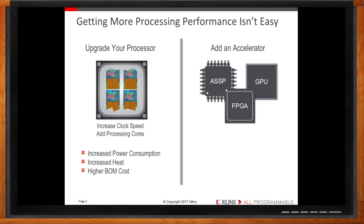For example, you can go with an ASSP that's ideal for the application processing you need, but you get almost no design flexibility for product differentiation — your design would have the same capabilities as your competitors. GPUs and FPGAs are very flexible, but come with software design complexity, potentially increasing product development time. Adding another chip also introduces BOM cost considerations and hardware design complexity. So a hardware accelerator can do the job, but adding a chip makes product development more challenging.